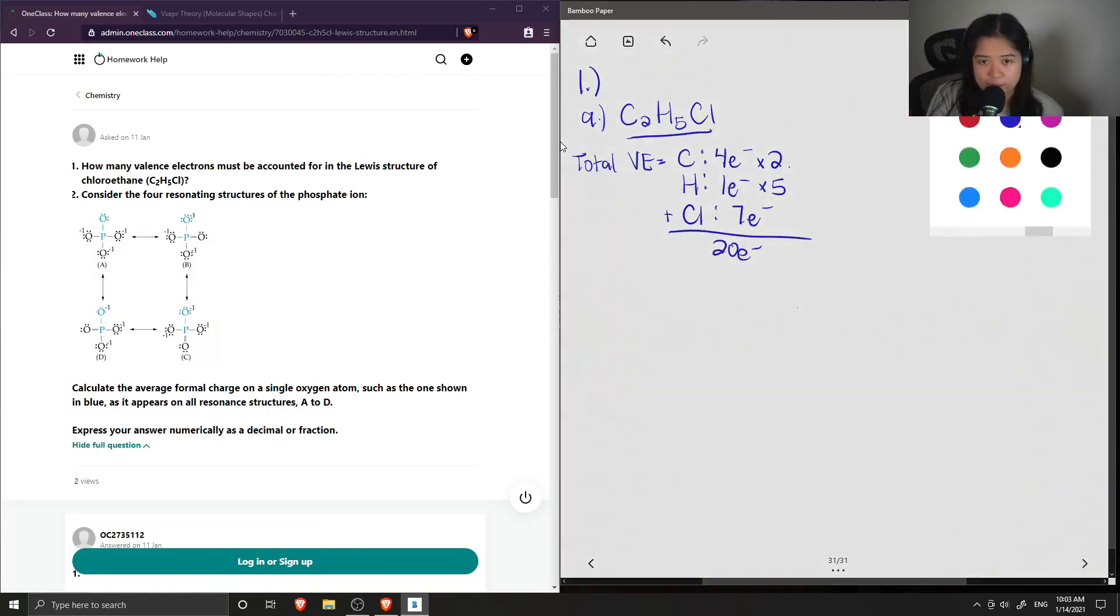So now the Lewis structure will contain the two carbons that have a single bond. And then I'm going to draw three hydrogens singly bonded to one of the carbons, and then two hydrogens single bonded to the second carbon. And then finally, I'll draw my chlorine.